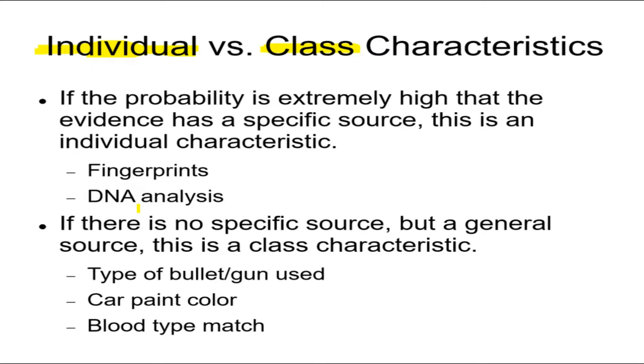Sometimes, however, the clues and the evidence we have cannot identify an individual. There's no specific source. Like a type of bullet. It's a 20 caliber bullet. Now, not all guns, there are many guns that fire this specific caliber of bullet, but not all guns.